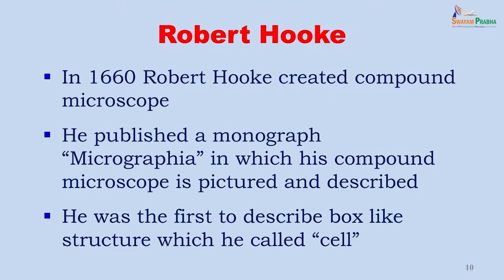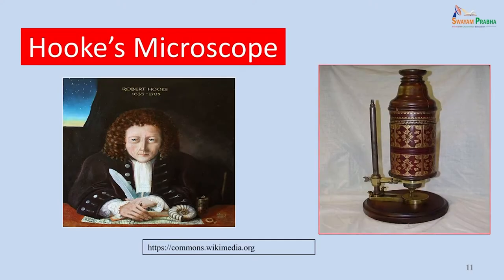A better microscope was created in 1660 by Robert Hooke, who created the compound microscope and published a monograph called the Micrographia, in which he described the compound microscope and what he saw through it — including box-like structures he called cells, which we still call cells today. This is Robert Hooke and his really elegant-looking microscope.